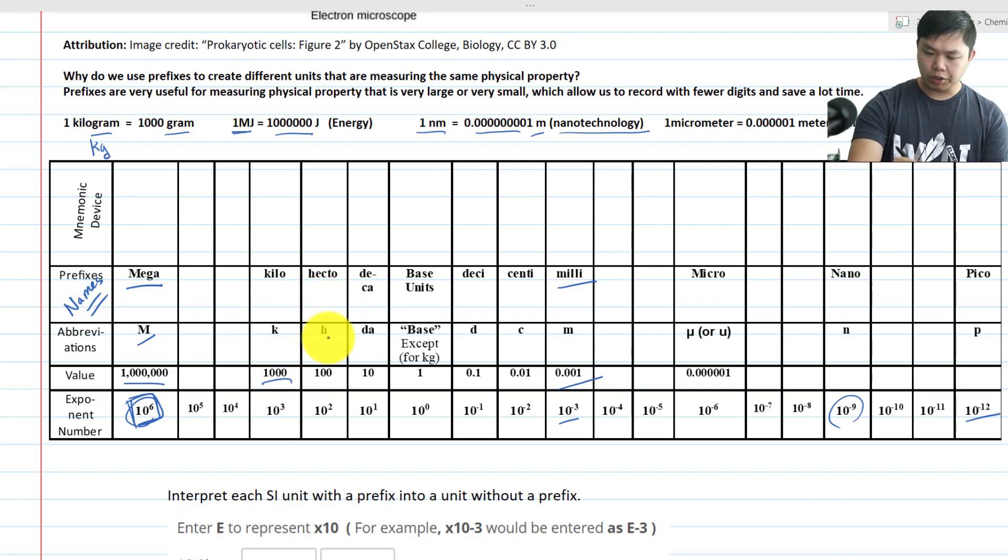Hectos, H, 10 to the 2nd. Deca, DA, 10 to the 1st. And here we have the base, more exactly, is the base unit in terms of base as we use this. This is not the same thing as the base unit that we have for SI. This is the base in terms of wording.